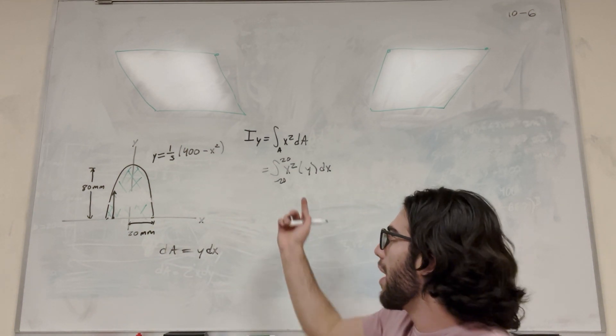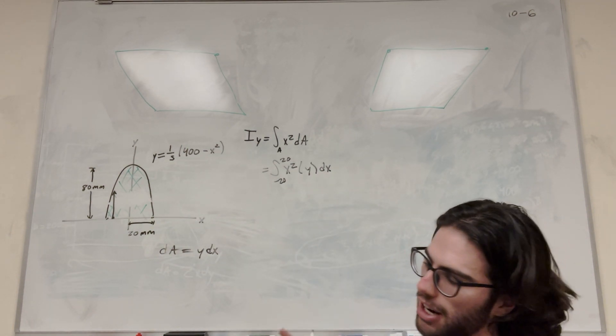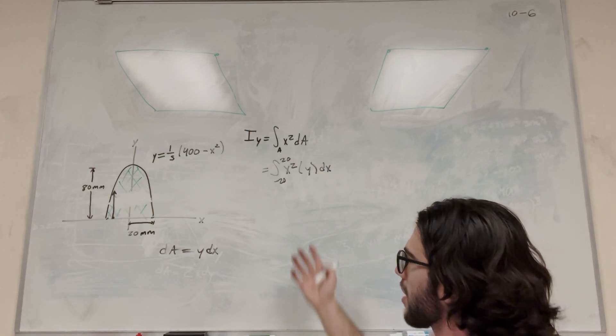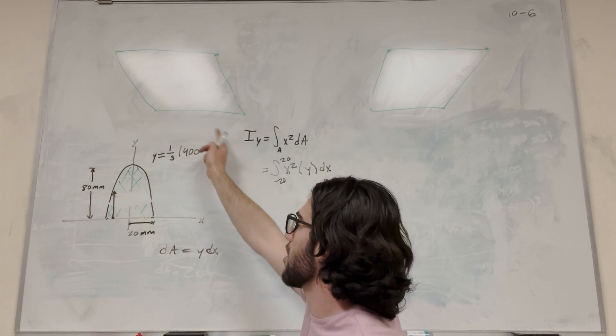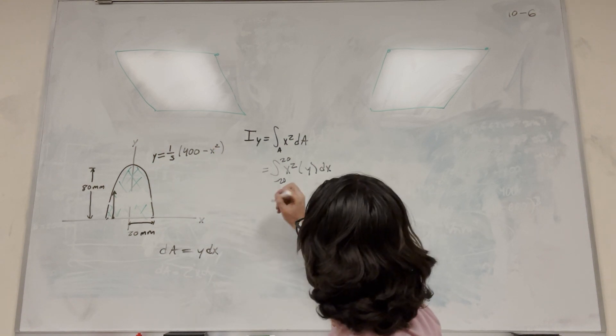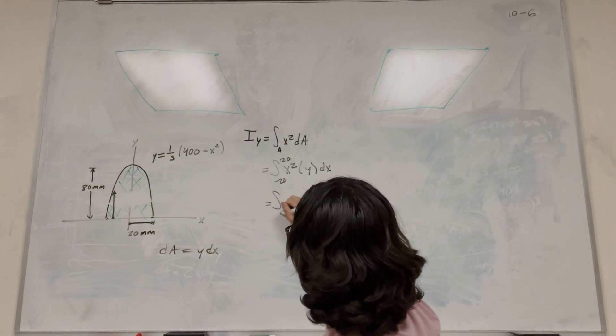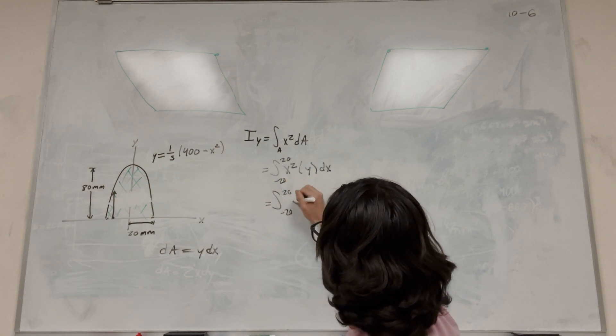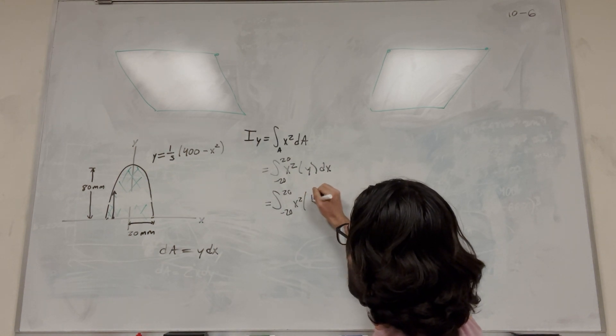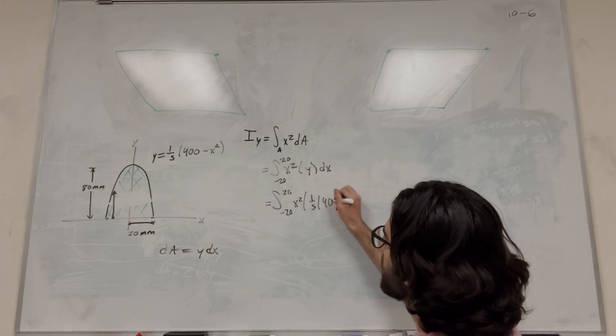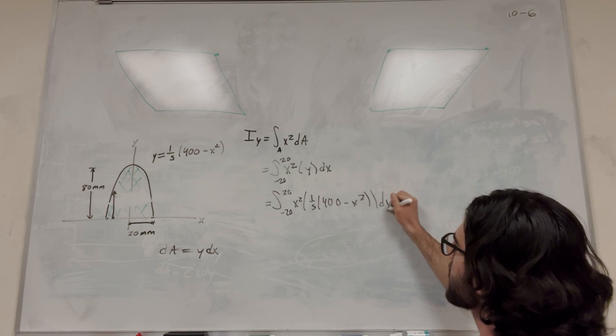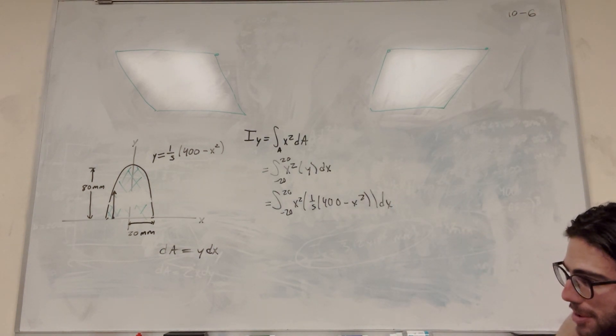So now we have this integral, but we have a y in our integral with the dx. So we need to get rid of that y. We're going to get rid of that y by just putting it in here because this y is in terms of x. So we can just put that right in, negative 20 to 20, x squared, then it's going to be one-fifth times 400 minus x squared, dx. So there we go. Pretty simple.